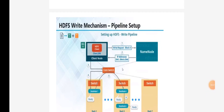Good morning class. Our next topic is HDFS write mechanism. In the previous lectures, we have seen that the data which we have to write in the HDFS file system should first be formed in the form of blocks. For example, here we are having two blocks: block A and block E. So first, the client will ask the name node that it wants to store block A in the HDFS file system, providing a write request in the first step.